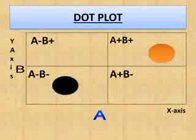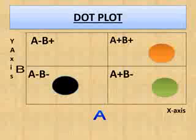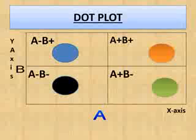Now look at this black cell population — lagging in A and also lower in B: A negative, B negative. This is the double negative quadrant. Now look at this green cell population — ahead in A and lower in B. This is the A positive, B negative quadrant. Now look at this blue cell population — lagging in A, higher in B: A negative, B positive. The double positive quadrant has high granularity as well as larger size, and the double negative quadrant has no granularity and smaller size.